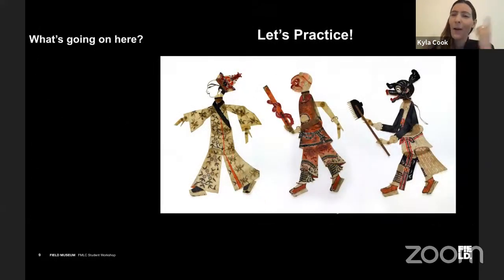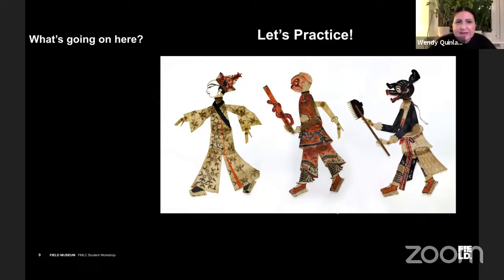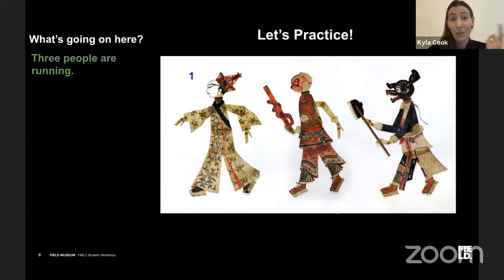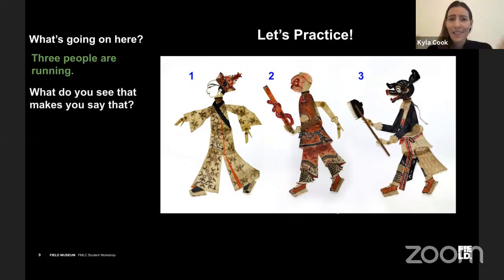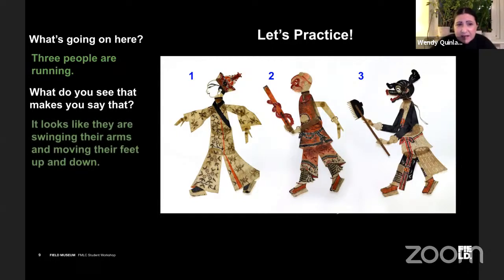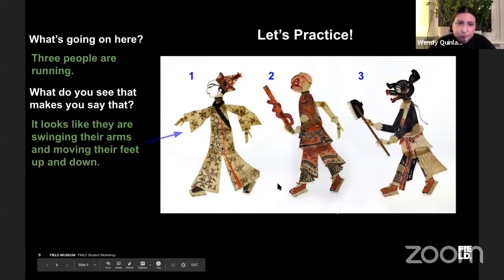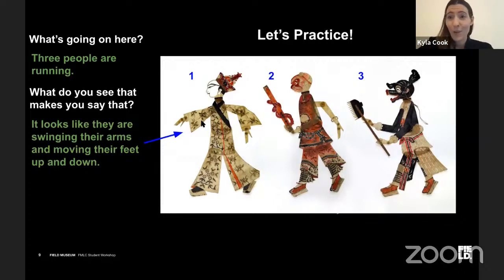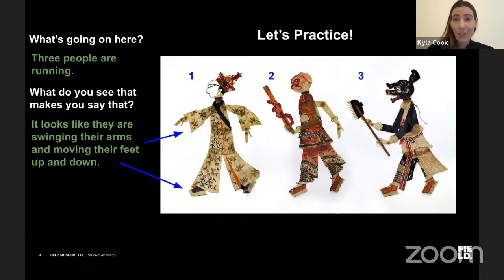The first question: what's going on here? Well, it looks like these three people are running. So you're seeing three people running — and Wendy, what do you see that makes you say that? If I look closely at their arms and legs, it looks like they're swinging their arms back and forth and moving their feet up and down like we do when we run. So their arms aren't straight at their sides — they're swinging — and their feet aren't flat on the ground, suggesting they're in motion.